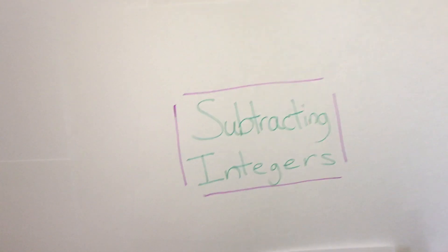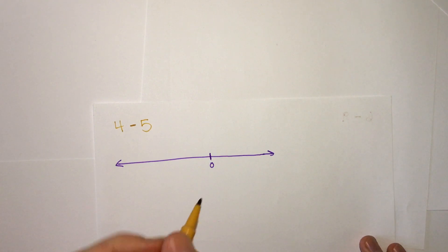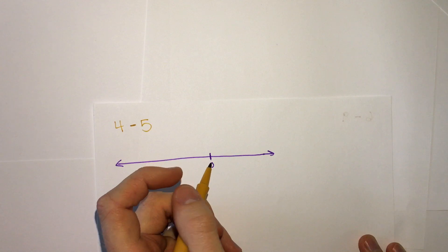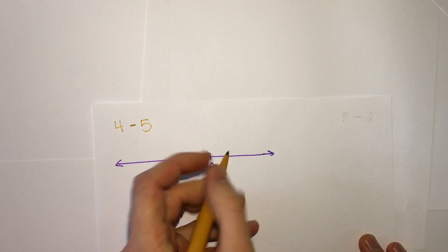We're going to look at a few different examples and use the number line to help us. We'll start with 4 minus 5. The answer might be obvious just looking at it, but we're going to look at the number line, what it means to subtract 4 minus 5.